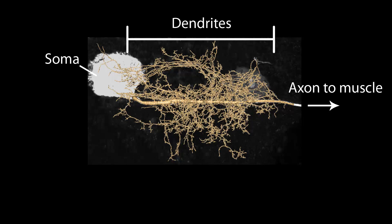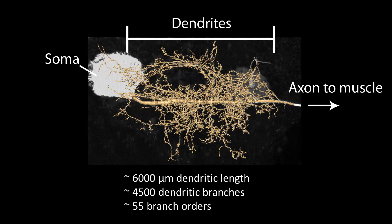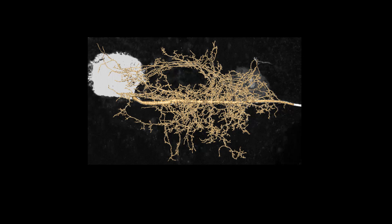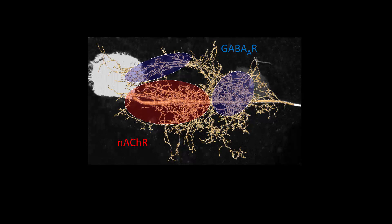What we find is that between animals, this neuron contains more than six millimeters of total dendritic length comprised of four and a half thousand dendritic branches. We also know that this dendritic tree contains two separate synaptic input streams: namely cholinergic inputs that are mainly targeted to the proximal dendritic domain of this neuron, shown in red, and GABAergic inputs that are mostly targeted to dendrites which arise from the distal part of the primary neurite, shown in blue.